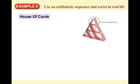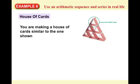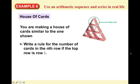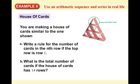Now we're going to use an arithmetic sequence and series in a real-life problem. You are making a house of cards. We call the top row row 1, the next row row 2, and the bottom row row 3. Part A: write a rule for the number of cards in the nth row. Part B: what is the total number of cards if the house has 14 rows?